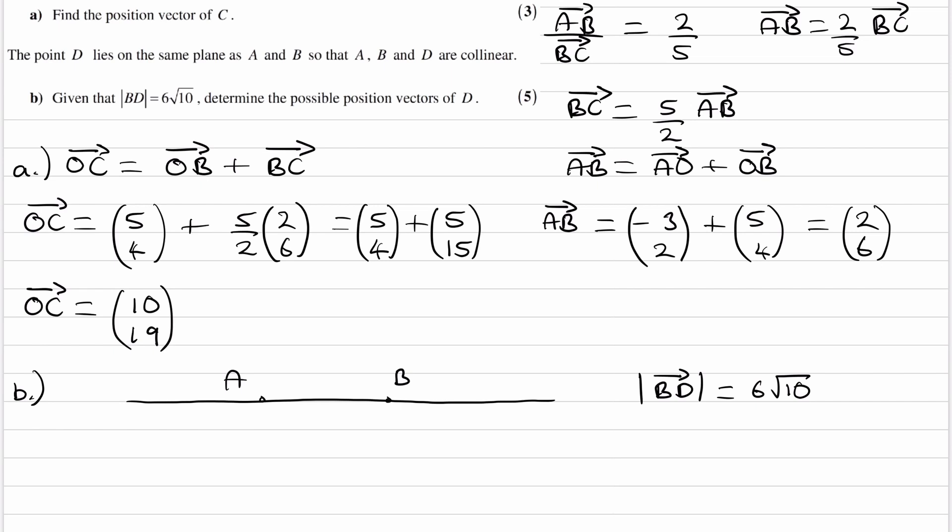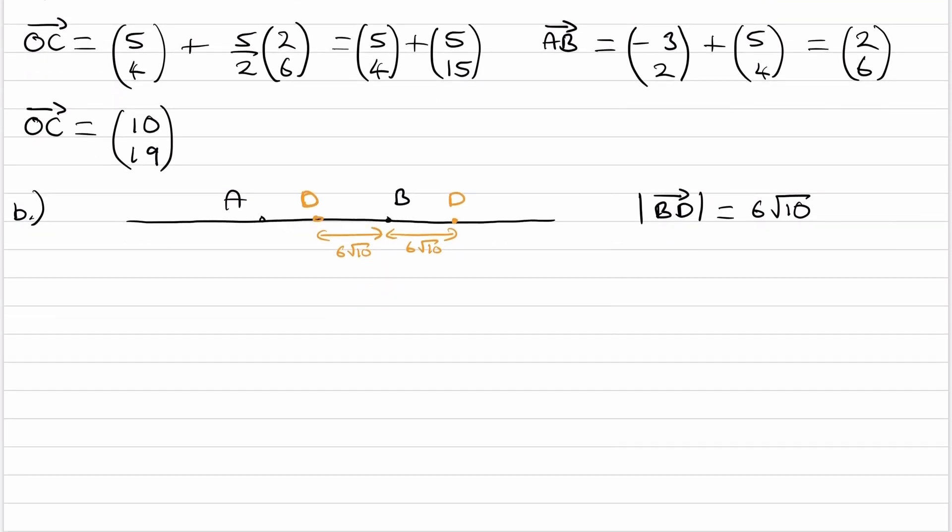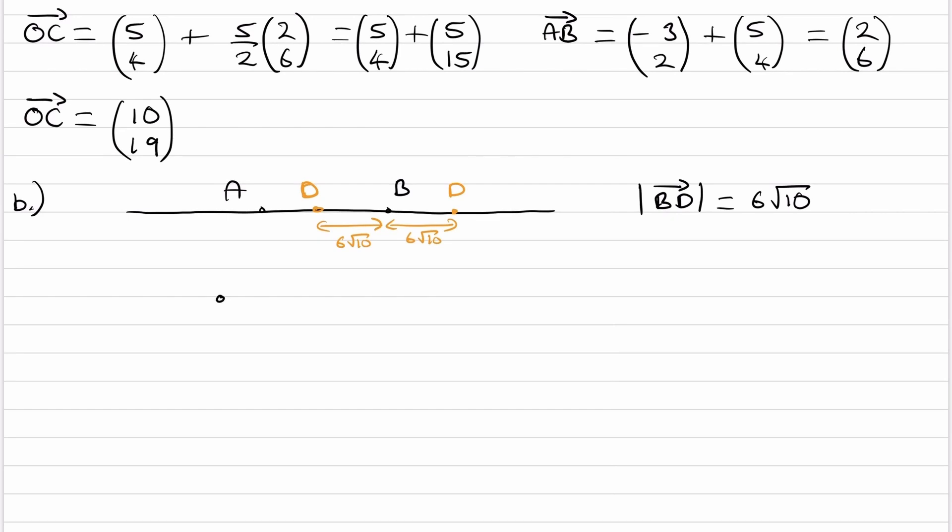We're trying to work out the possible position vectors of D. So D could be, for instance, here or here, such that these two lengths are both 6√10. It could be either one, and we're trying to work out those two position vectors of D.